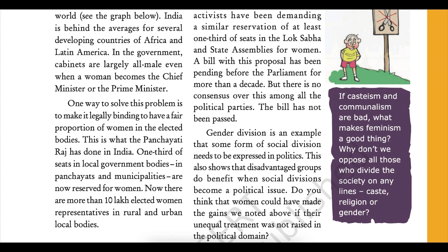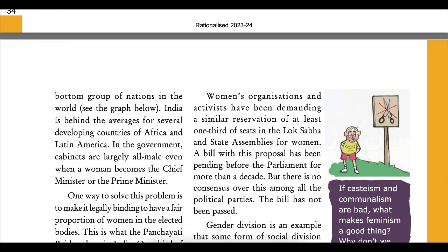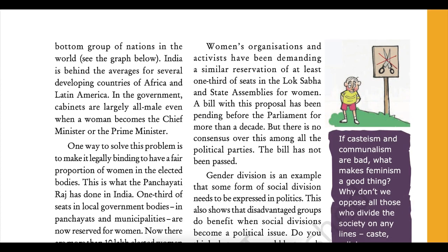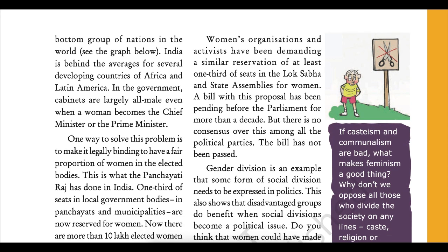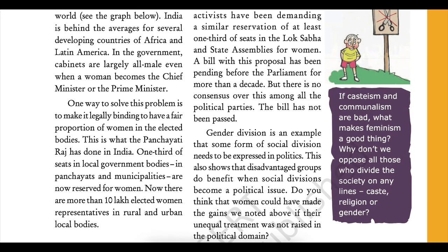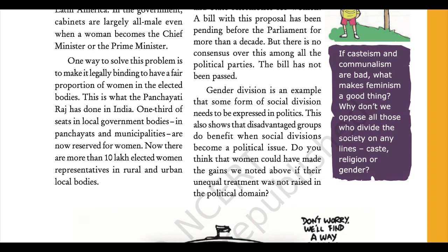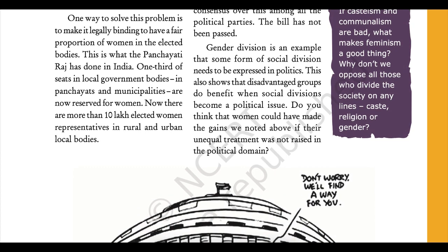One way to solve this problem is to make it legally binding to have a fair proportion of women in the elected bodies. This is what the Panchayati Raj has done in India. One-third of the seats in local government bodies in panchayats and municipalities are now reserved for women. Now there are more than 10 lakh elected women representatives in rural and urban local bodies. Women's organizations and activists have been demanding a similar reservation of at least one-third of seats in Lok Sabha and state assemblies. A bill with this proposal has been pending before the parliament for more than a decade, but there is no consensus among all political parties and the bill has not been passed. Gender division is an example showing that disadvantaged groups do benefit when social divisions become a political issue.